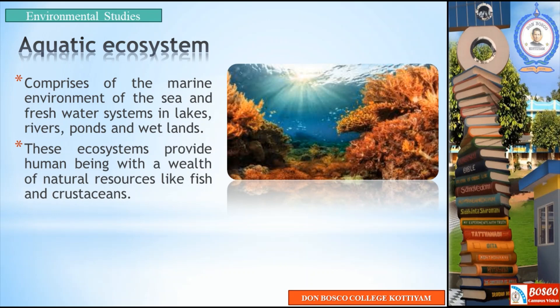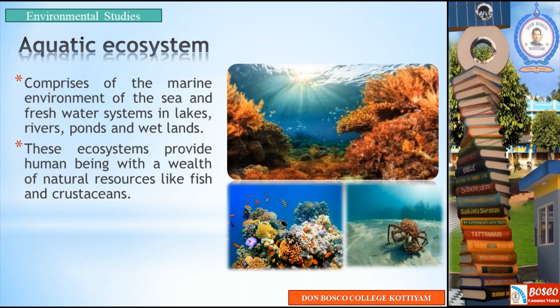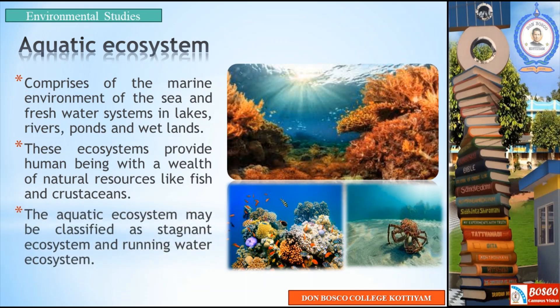These ecosystems provide human beings with a wealth of natural resources like fish and crustaceans. Fish and crustaceans include types of shellfish such as crabs, lobsters, and prawns. The aquatic ecosystem may be classified as stagnant ecosystem and running water ecosystem.